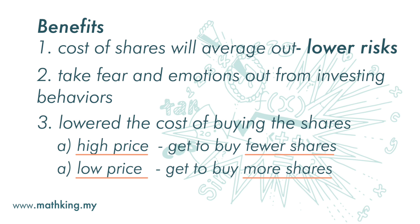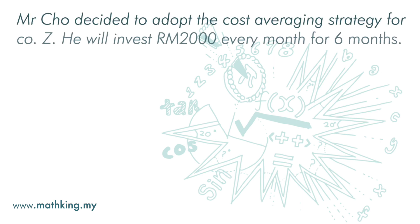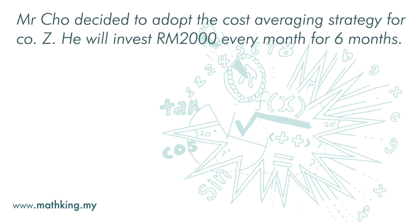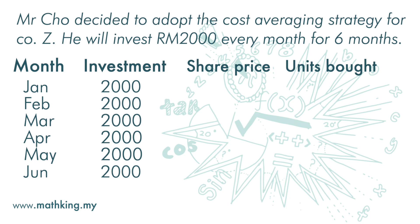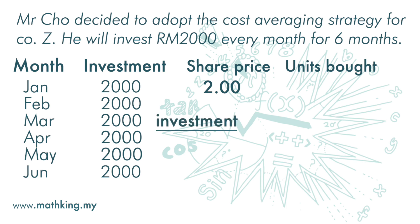Now let's look at one example. Mr. Chu decided to adopt the cost averaging strategy for company Z. He will invest 2,000 ringgit every month for 6 months. In January, the price of the share is RM2.00. The units of shares he buys is the investment amount divided by the share price — so 2,000 divided by 2 — meaning he can buy 1,000 units.